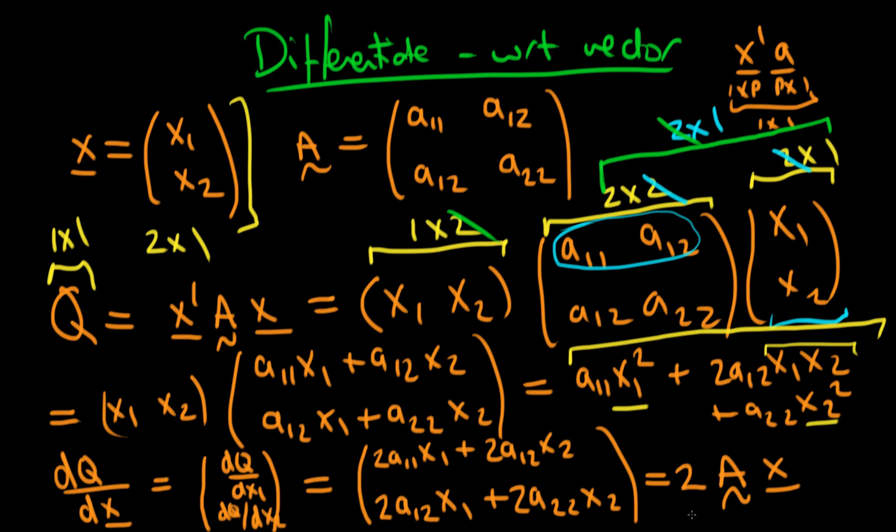And now when we see it in this form, it's another sort of supporting evidence for why we call this a quadratic form. Because remember when you were first taught calculus, and you had y equals x squared, when you differentiate y with respect to x here, you've got a 2 out the front, so you've got 2x. And essentially that's what we've got here. We've got out a 2 after we've differentiated it, times our original thing, Ax.